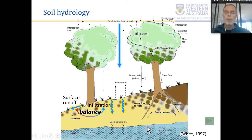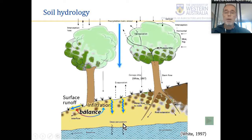One of the main input-output pairs we consider is the balance between infiltration — water percolating into the soil and being stored at least temporarily — and surface runoff, where water doesn't infiltrate and escapes by running off over the land onto another part of the landscape, potentially into streams and rivers where it's lost from the terrestrial system.